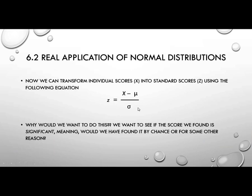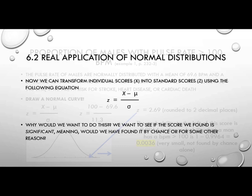So now here's the Z-score formula. We can now transform individual scores, these X-scores, into standard scores, Zs, by using this following equation. So what do we have here? We have the score minus the population mean, which is a parameter, divided by the standard deviation of the population. Why would we want to do this? We want to see if the score we found is significant, meaning would we have found it by chance, or for some other reason. We're going to talk more about that in the following chapter as well.